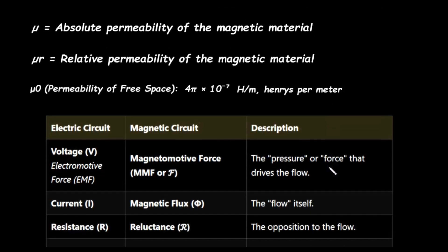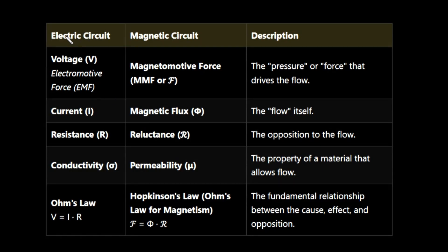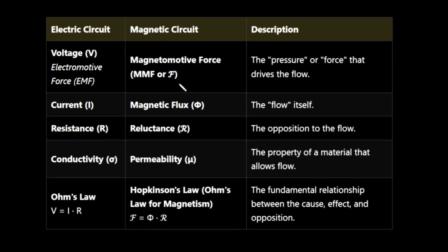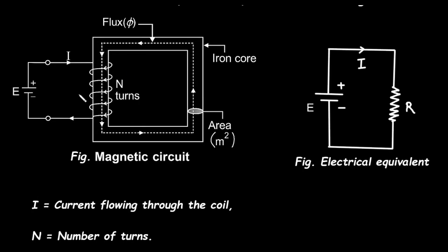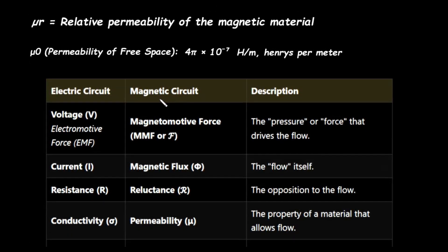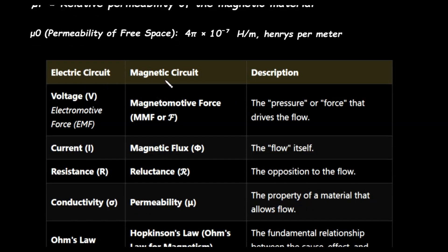Now let's see the comparison between electric and magnetic circuits. In the case of an electric circuit, there is voltage, which we call electromotive force or EMF. But in the case of a magnetic circuit, there is a magnetomotive force, which we call MMF or F. Both are the pressure or force that drives the flow — EMF drives the flow of electrons, while MMF drives the flow of magnetic flux.